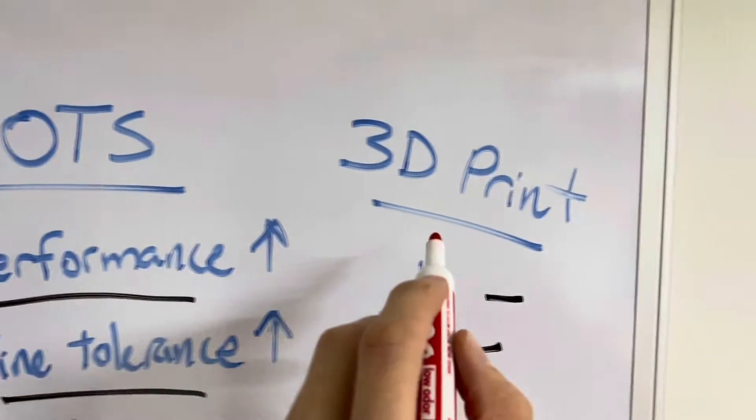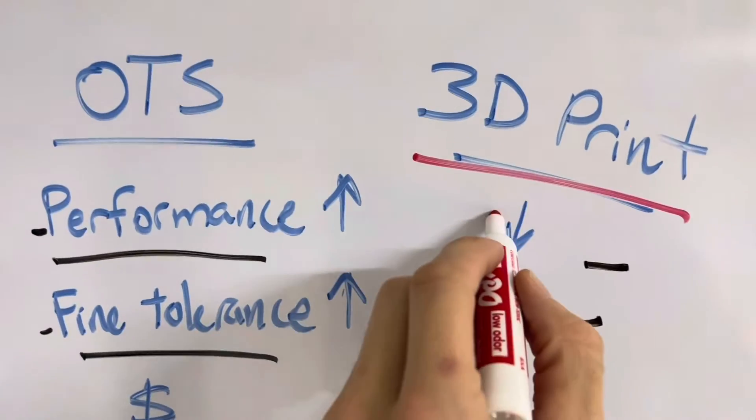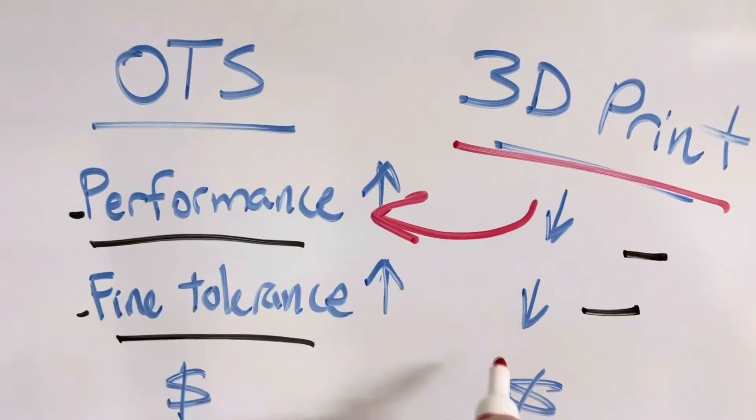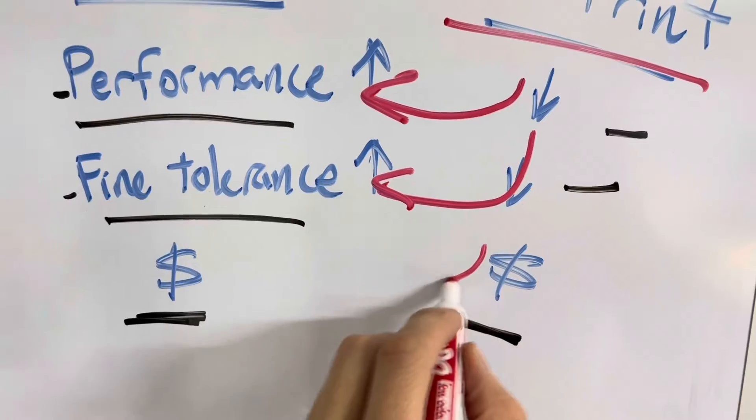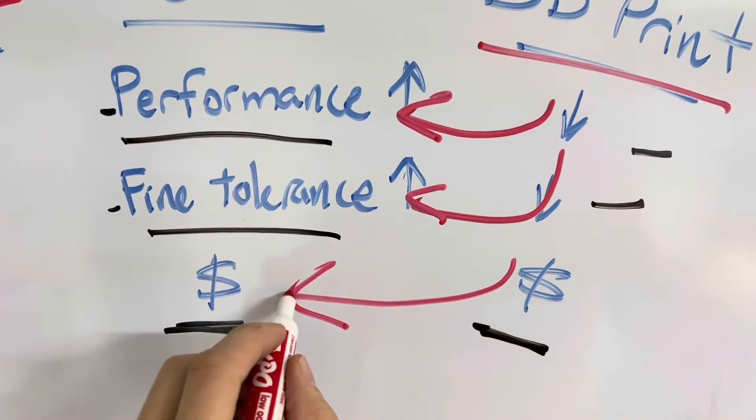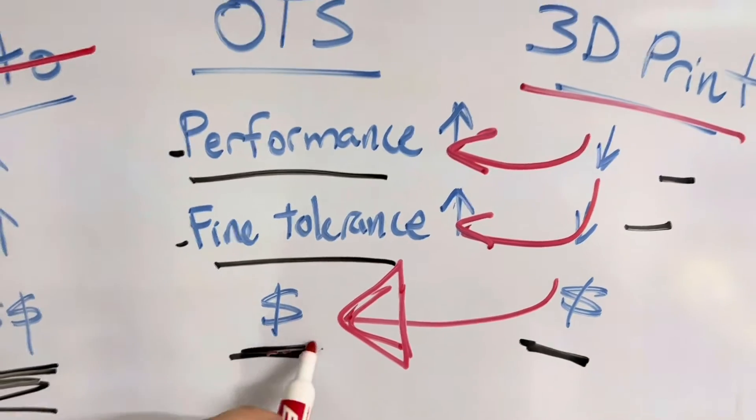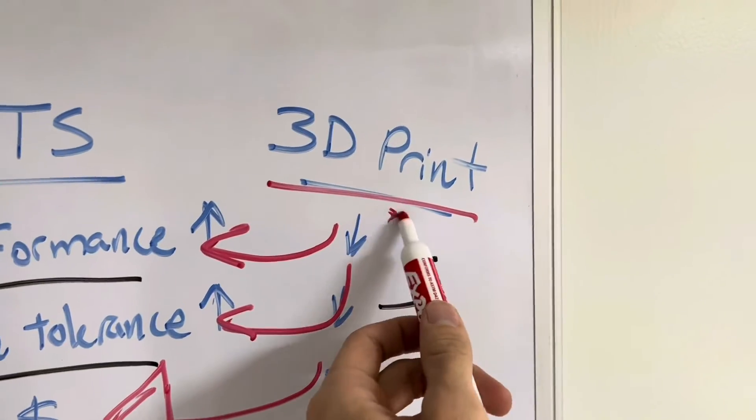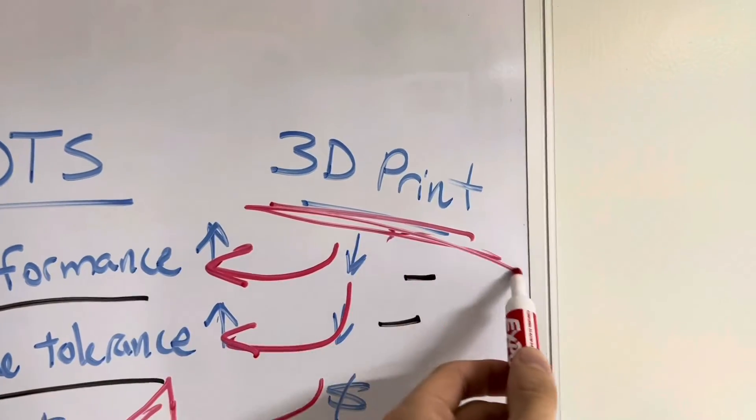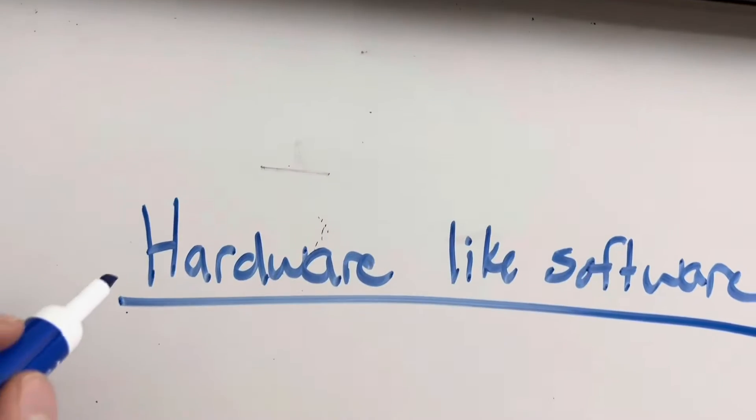You take your design that you have desired and then you borrow the performance of the off-the-shelf parts, you borrow their fine tolerances, and you borrow their low cost. All that engineering spread out across thousands or millions of units makes it very affordable, and you only design the very elements that you need that's unique to your system. If we do these things, we can begin to make hardware the way software has been for the last 20 years.